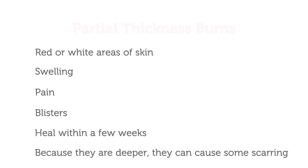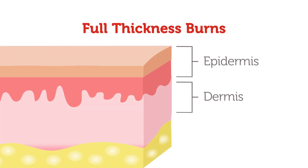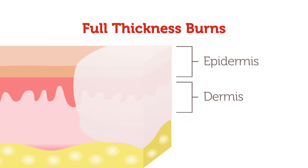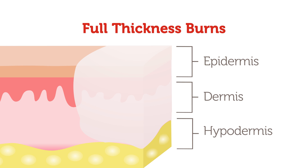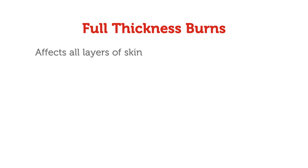The third type of burn is called a full thickness burn. This is when both layers, the dermis and epidermis, are both gone. Sometimes these can go deeper and affect the hypodermis — the layer under the dermis — which contains tissue and is the storage site of most body fat. A full thickness burn affects all layers of skin.